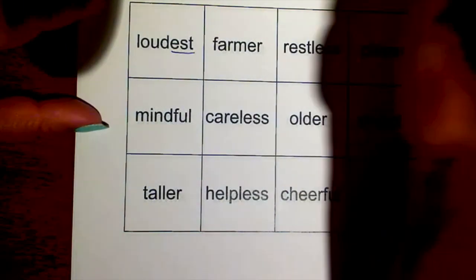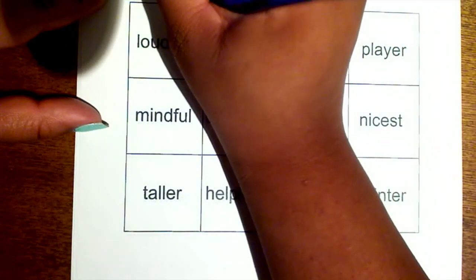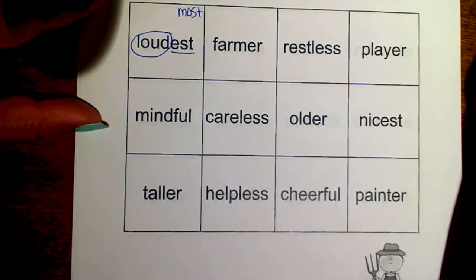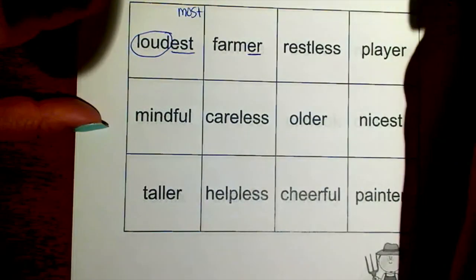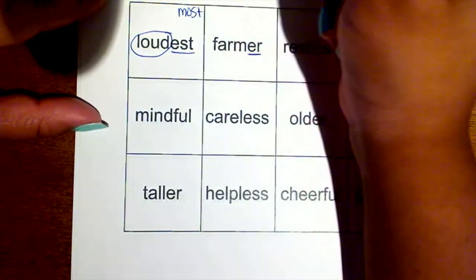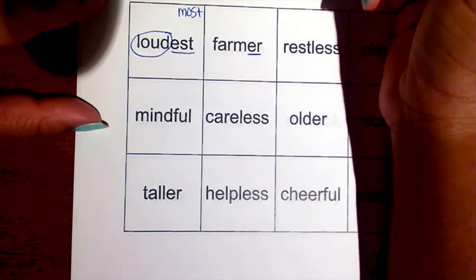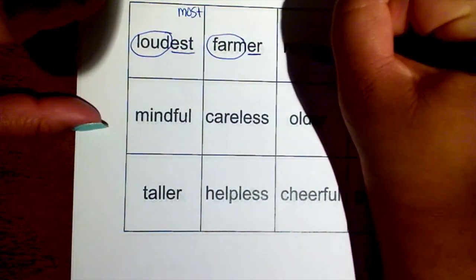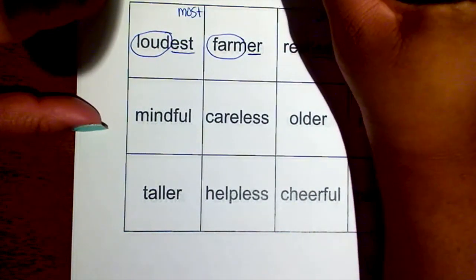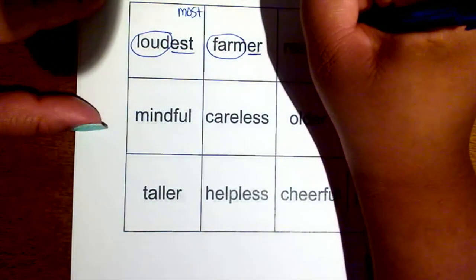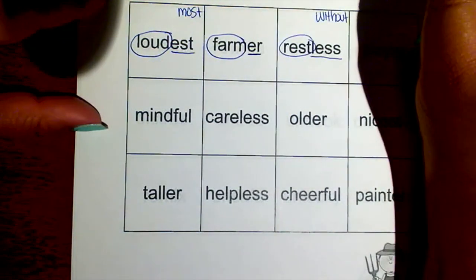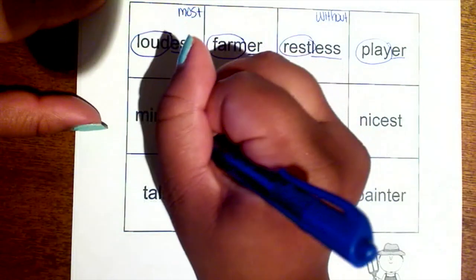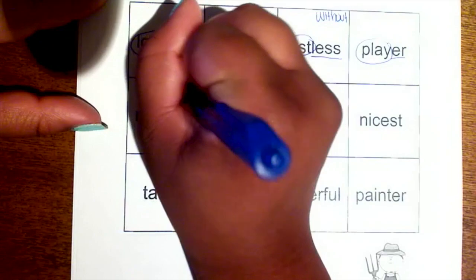'-est' is a suffix that means 'most.' The root word is 'loud.' '-er' right here can mean 'a person who' but can also mean 'more.' '-less' means 'without.' We've got 'player,' and '-ful' which means 'full of.'